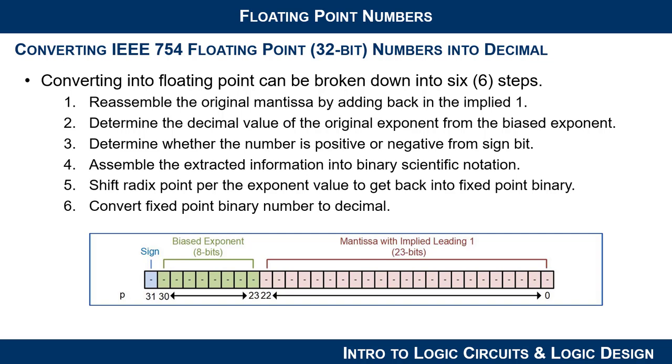Then extract the biased exponent and determine the decimal value of the original exponent. Then find out whether the final number is positive or negative from the sign bit. And then you assemble the binary scientific notation from those fields that you extracted the information from.